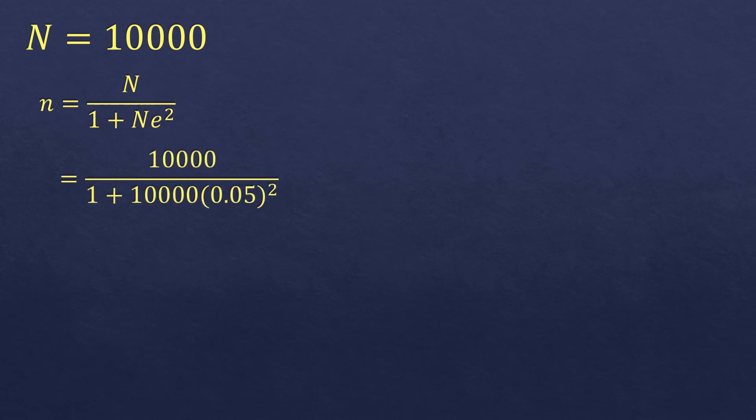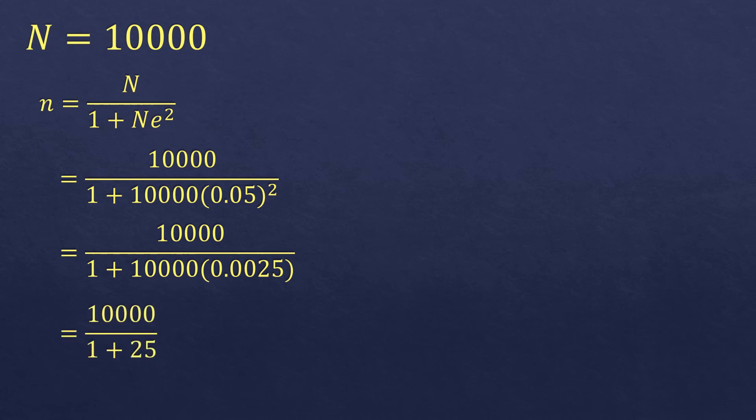Now let's make it bigger. We have a population size of 10,000. So the formula for Yamane's formula will be here. And we are going to substitute the population size, which is 10,000, and the margin of error of 0.05. So we are going to compute 0.05 squared, which is 0.0025. And then multiply by 10,000, which will be 25.